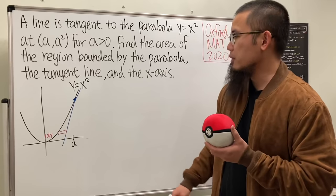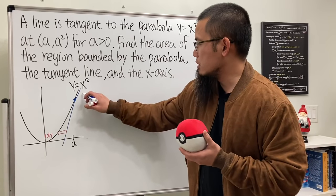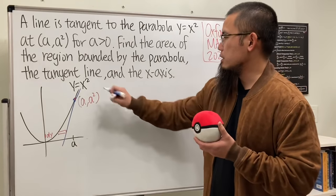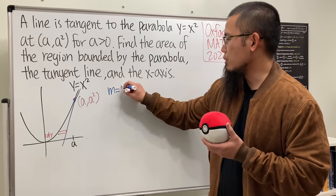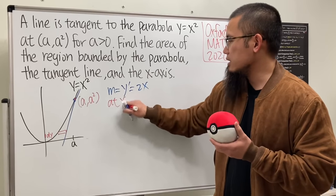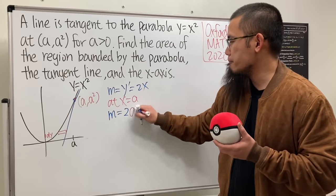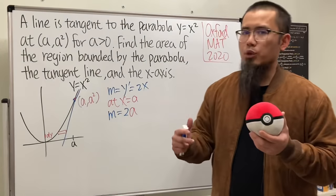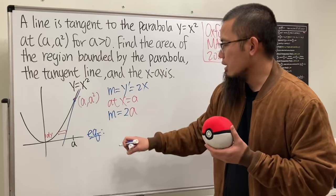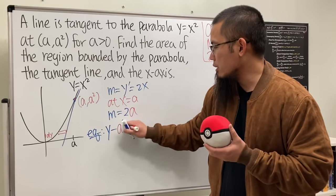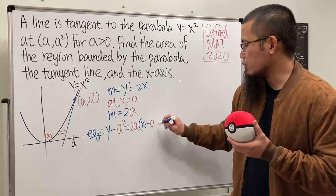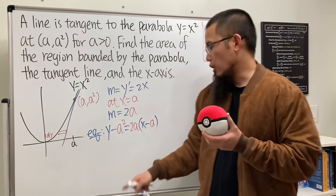First we get the derivative to find the slope. The point of tangency is (a, a²). The slope m equals the derivative 2x evaluated at x equals a, so m equals 2a. Now we have the point and the slope, so we use point-slope form: y minus a² equals 2a times (x minus a). That gives us the equation of the tangent line.